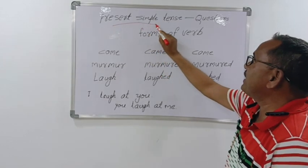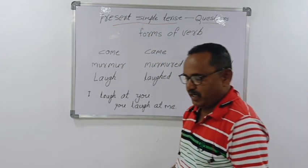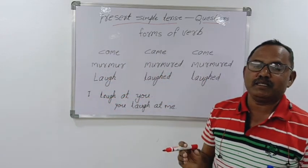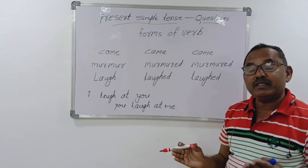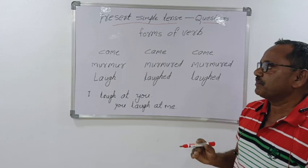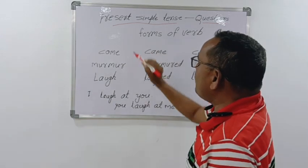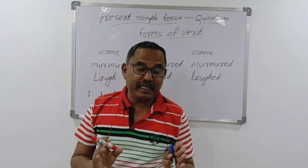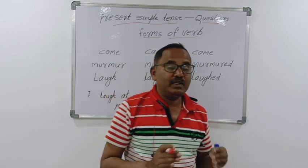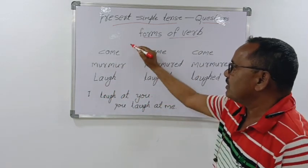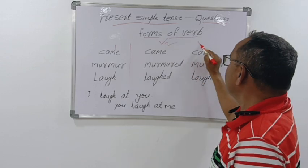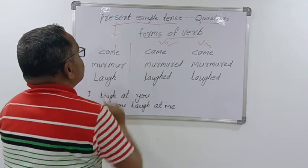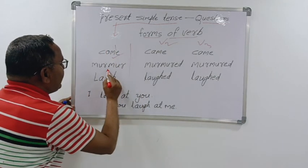How do we make questions in present simple tense? Every time I discuss verb forms - there are three forms. First form, second form V2, and third form V3. In present simple tense, you must use the first form only. Don't use the second form and third form, only first form.